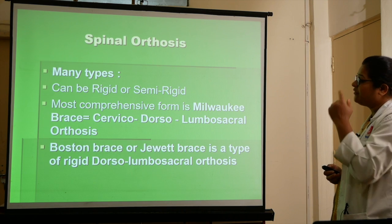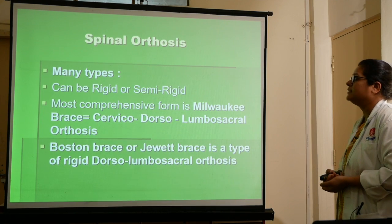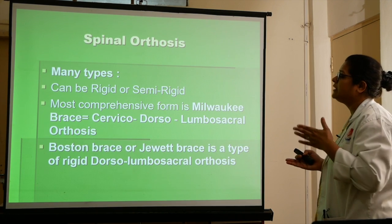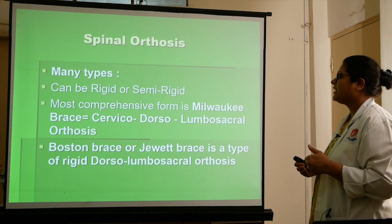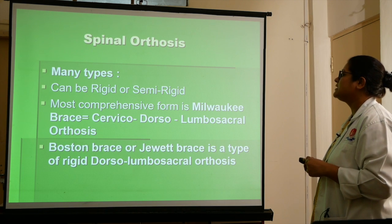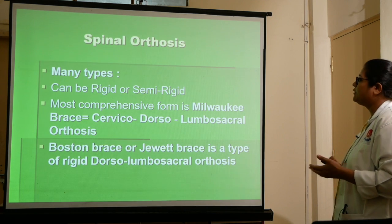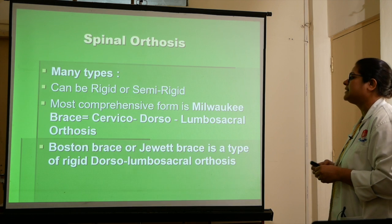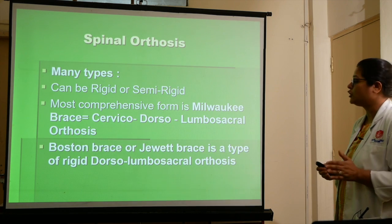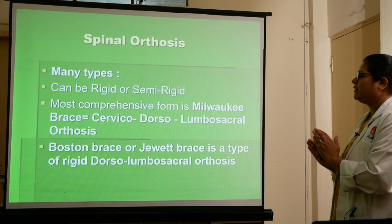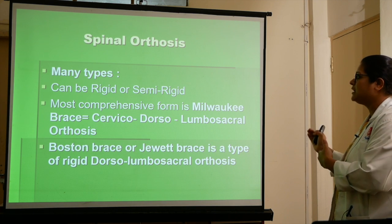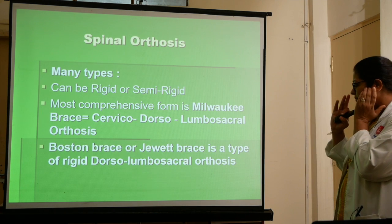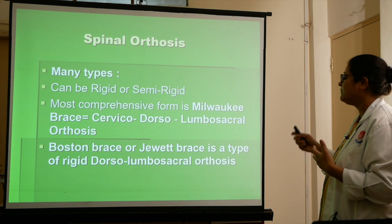Spinal orthoses are of many types and can be rigid or semi-rigid, depending on whether you need to support the whole, mid, or a flexible joint segment. The most comprehensive form is the Milwaukee brace — a cervico-dorso-lumbosacral orthosis. The Boston brace or TLSO is a type of rigid dorso-lumbosacral orthosis. Compared to all spinal orthoses, the Milwaukee brace is the most commonly used, though the Boston brace and Jewett brace are also used.